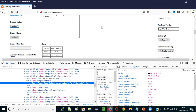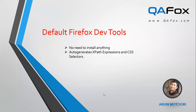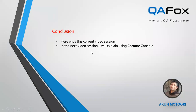This was the practical demonstration. Now let's switch to the presentation mode. I have practically demonstrated how to auto-generate the XPath expressions and CSS selectors using the default Firefox dev tool options. Here ends this current video session. In the next video session, I will explain using the Chrome console, using which we are going to validate the XPath expressions and CSS selectors. I will be explaining that in detail in the next video session. So that's it guys, see you in the next video session. Thank you. Bye.